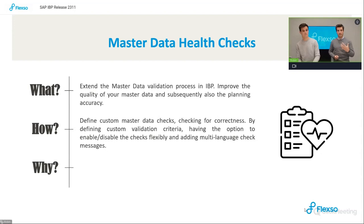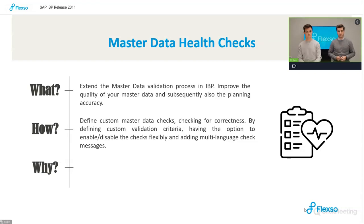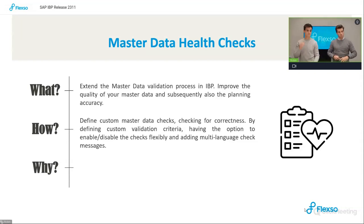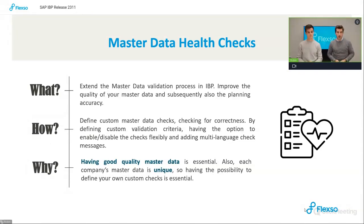This feature is aimed at improving your master data quality, ultimately leading to increased planning accuracy and better results. It's all about defining custom checks — customer-specific master data checks where you check for correctness and violations of specific attributes and values. You can introduce your own custom validation criteria, and also flexibly enable or disable these checks in the system as needed.